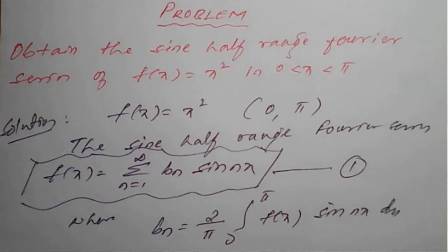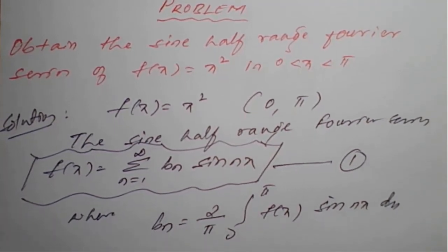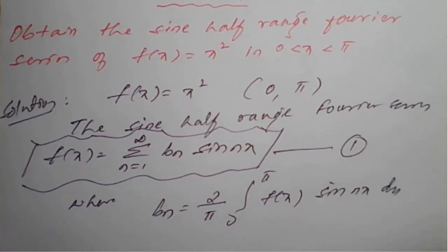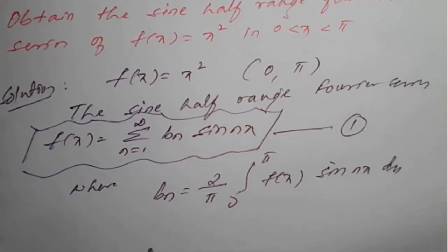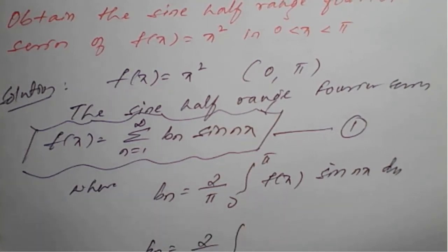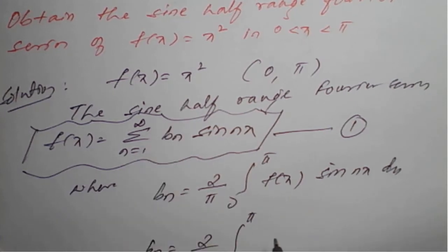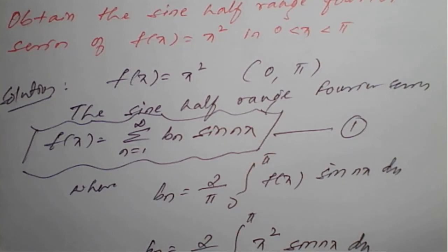The coefficient b_n is given by the formula: b_n = (2/pi) times the integral from 0 to pi of f(x) sine(nx) dx. This is the basic formula for the sine half range series. Using this b_n formula, we need to find the solution and apply it in equation number one. Here, the value of f(x) is x², so b_n = (2/pi) times the integral from 0 to pi of x² sine(nx) dx.